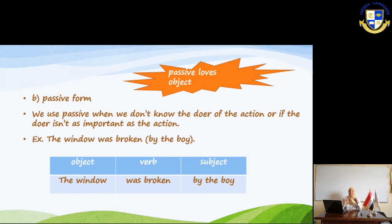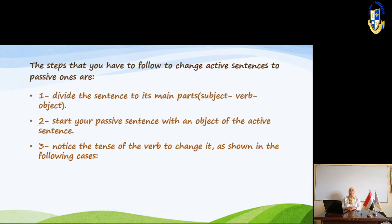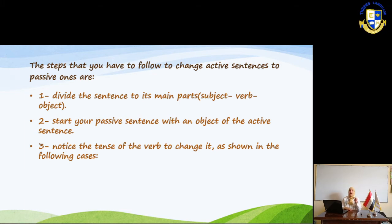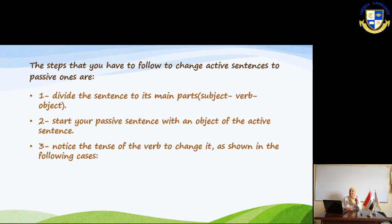Here are the steps for transforming active into passive. Step one: divide the sentence into its main parts — subject, verb, and object. Step two: start your passive sentence with the object of the active sentence. Step three: notice the tense — this is a very important step. You have to notice whether the tense is present or past.